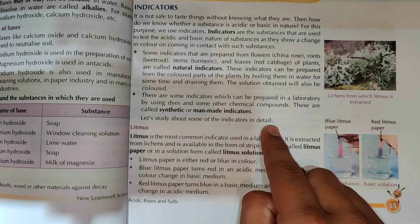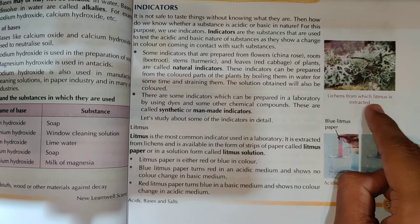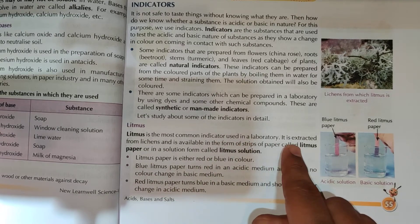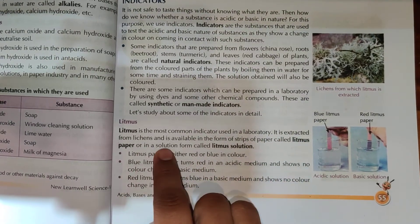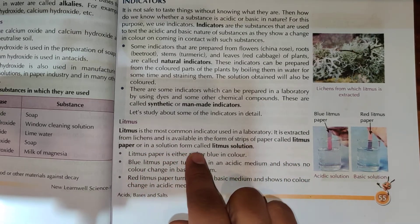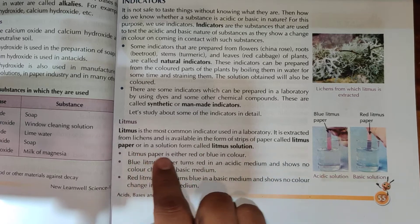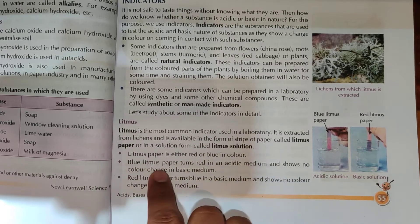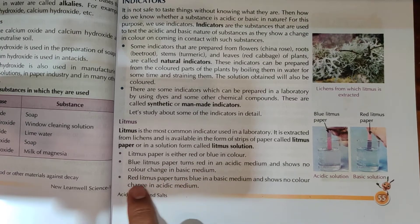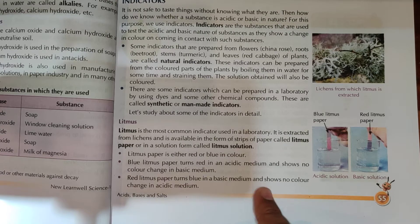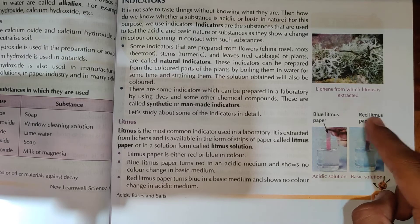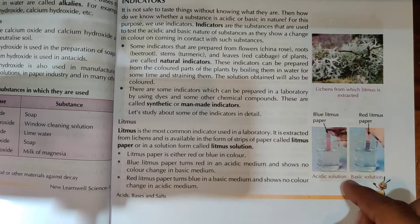Let's study some of the indicators in detail. Litmus is the most common indicator used in a laboratory. It is extracted from lichen and is available as strips of paper called litmus paper, or in solution form called litmus solution. Litmus paper is either red or blue in color. Blue litmus paper turns red in an acidic medium and shows no color change in a basic medium. Red litmus paper turns blue in a basic medium and shows no color change in an acidic medium.